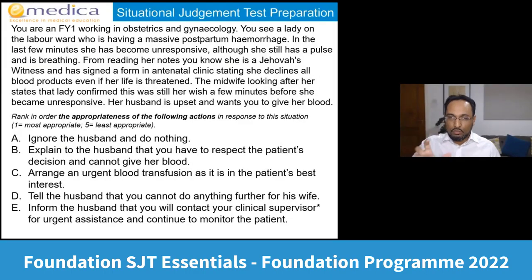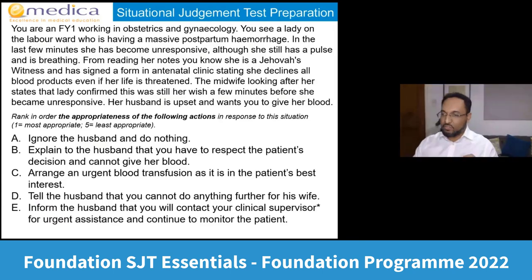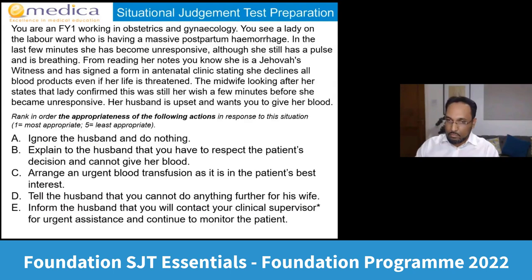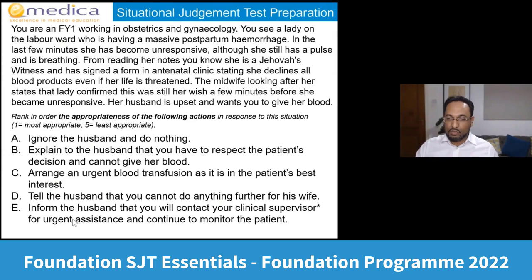There's no poll format for the full ranking, so just select which option you ranked number one. The biggest split in what people put first was between B and E. Most picked B — explain to the husband that you have to respect the patient's decision and cannot give blood — and after that E — inform the husband you will contact your consultant for urgent assistance and continue to monitor the patient. Let me do a quick read-back of the scenario. You're in obstetrics and gynecology. A woman has just given birth but is now having a massive hemorrhage and has become unresponsive — unconscious but with a pulse and breathing. You notice from the notes that she's a Jehovah's Witness who stated that even if her life is threatened she does not want blood products, confirmed by the midwife before she became unconscious. Her husband is upset and wants you to give her blood.